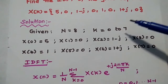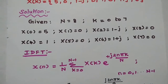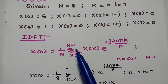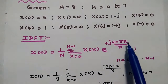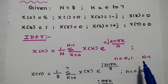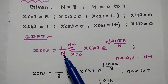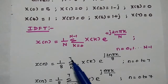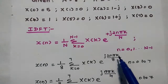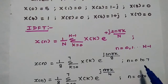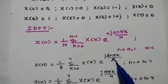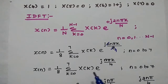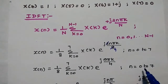We are going to find the IDFT for this sequence. The formula is x(n) = (1/N) × summation from k=0 to N−1 of X(k)·e^(+j2πnk/N), where n varies from 0 to N−1. Substituting N=8: x(n) = (1/8) × summation from k=0 to 7 of X(k)·e^(jnπk/4), where n varies from 0 to 7.